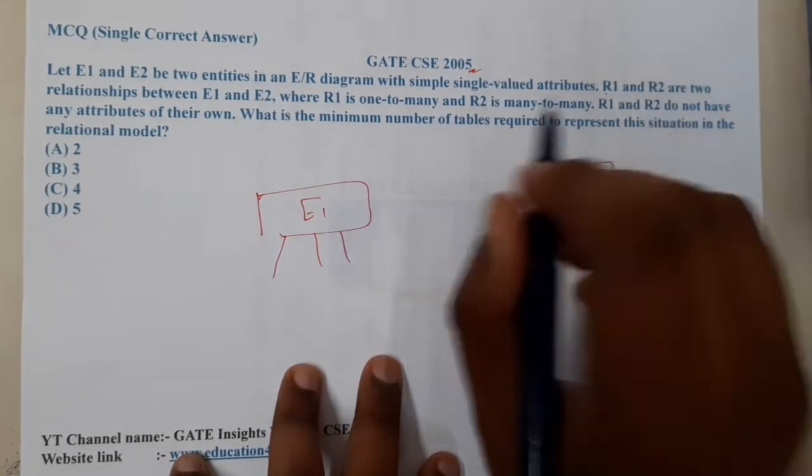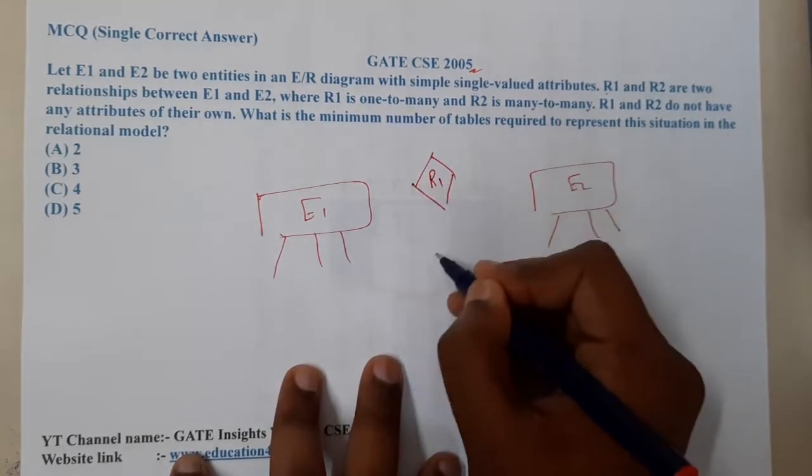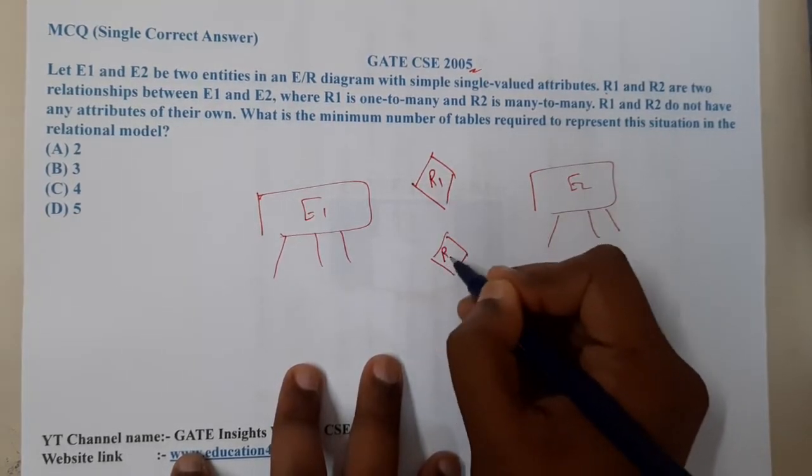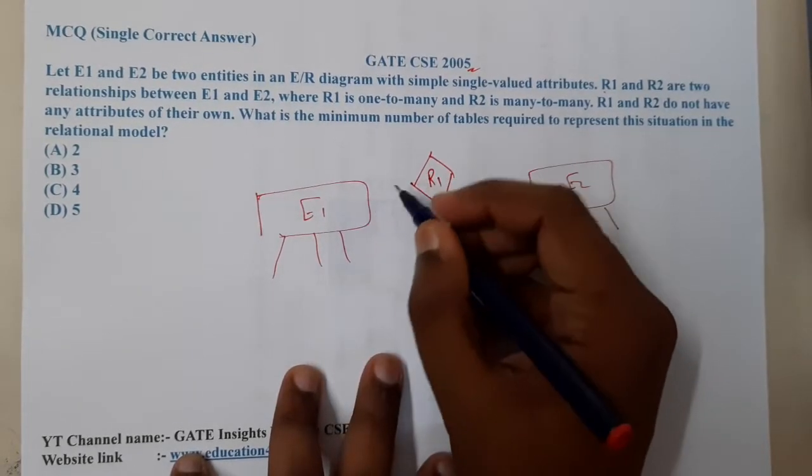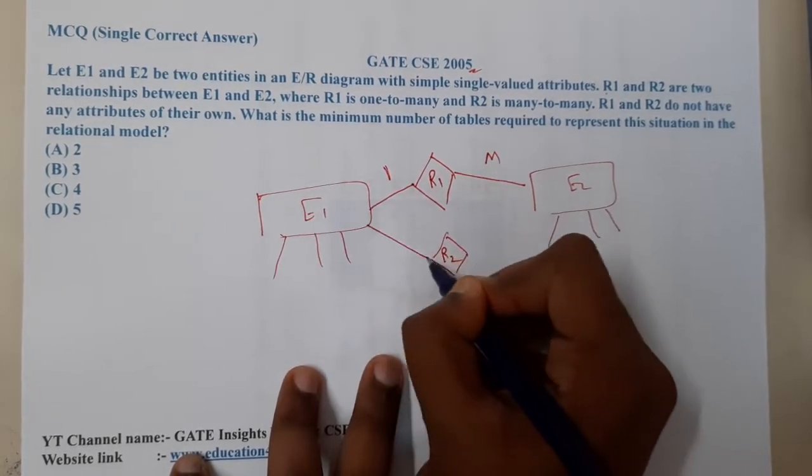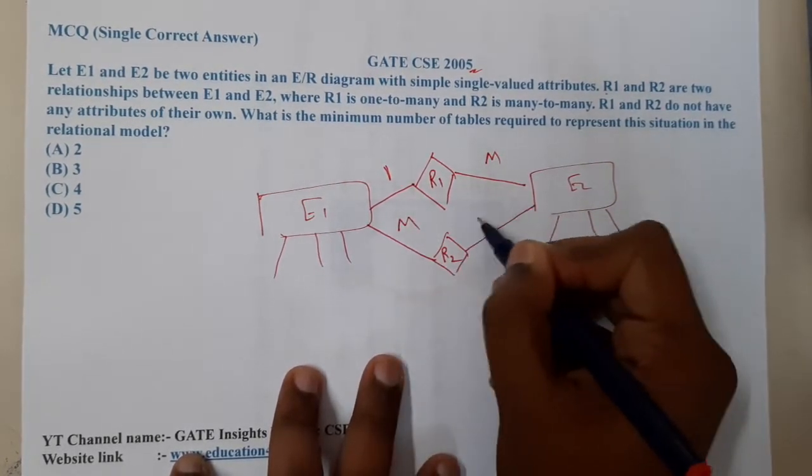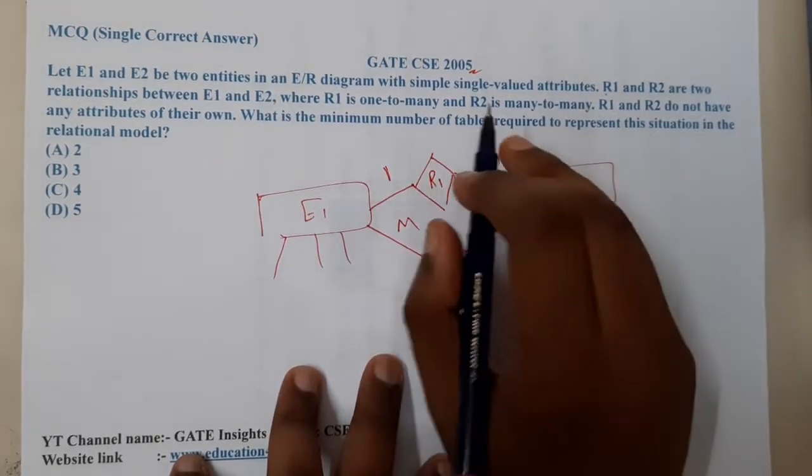They are saying R1 and R2 are two relations in between E1 and E2. So this is relation 1 and this is relation 2. Where R1 is a one-to-many relation, and R2 is a many-to-many relation. R1 and R2 do not have any attributes of their own.